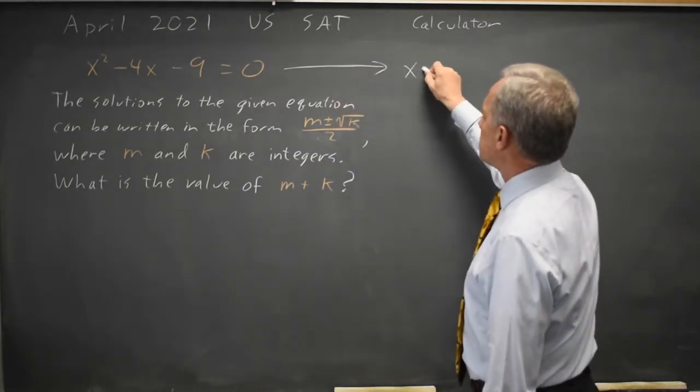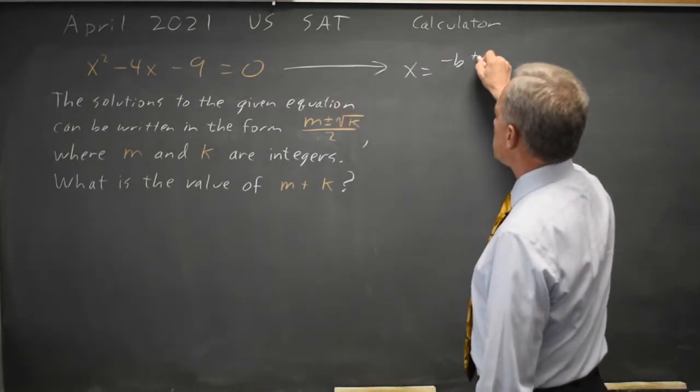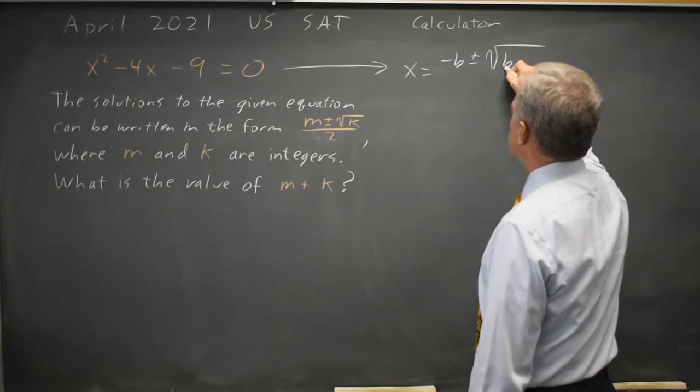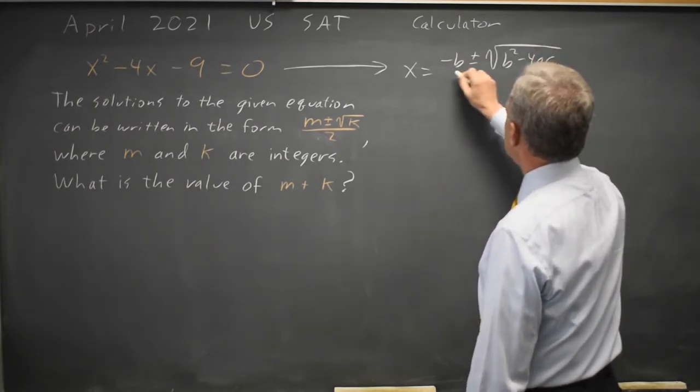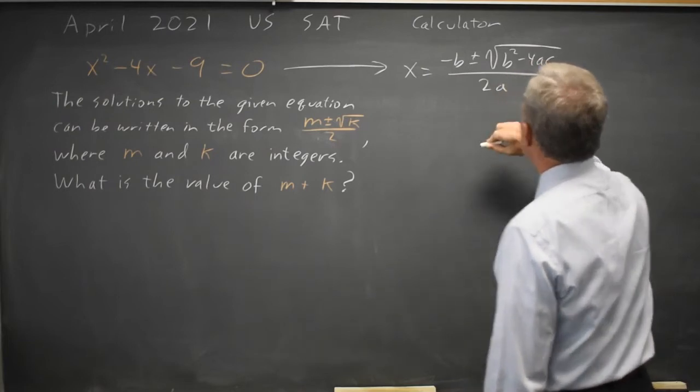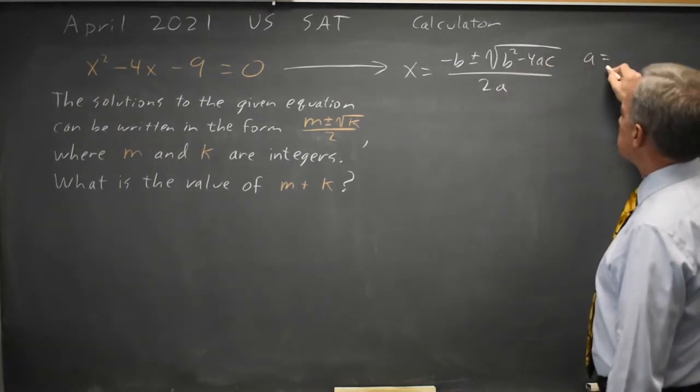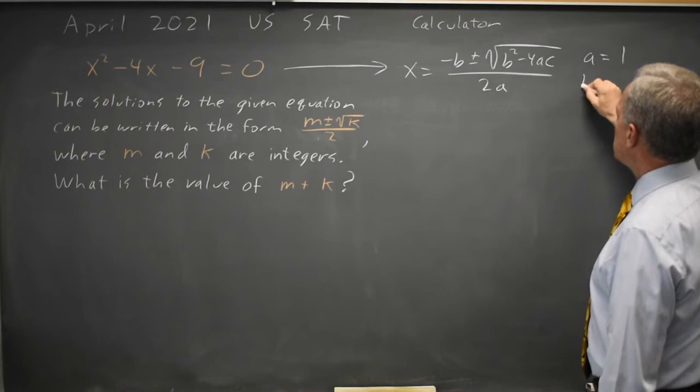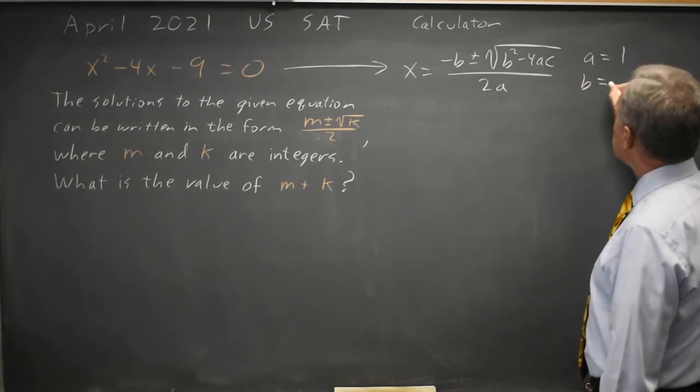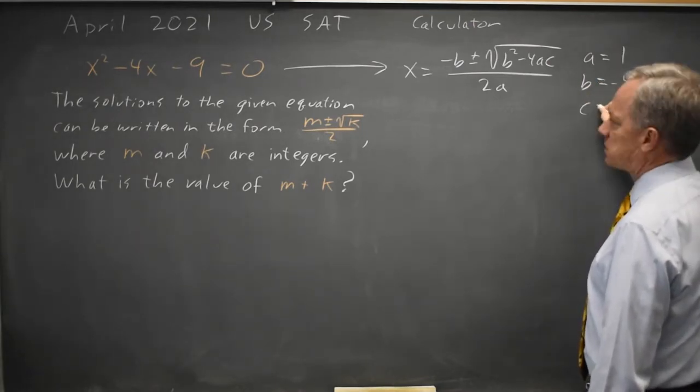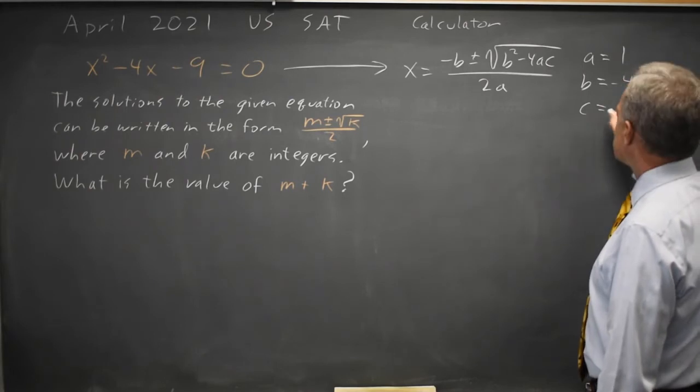We know that x equals negative b plus or minus the square root b squared minus 4ac, all of that over 2a, where a equals the x squared coefficient of 1, b equals the x coefficient of negative 4, and c equals the constant negative 9.